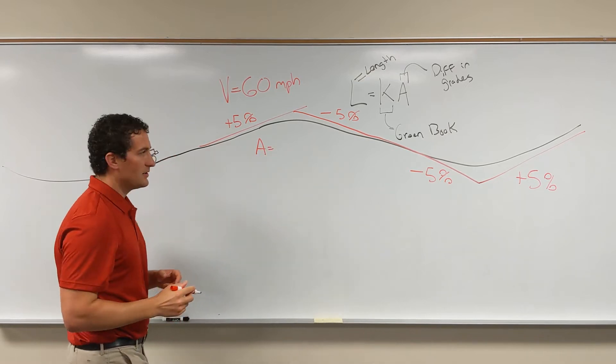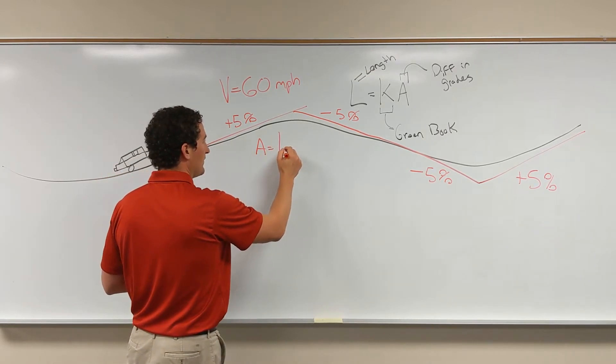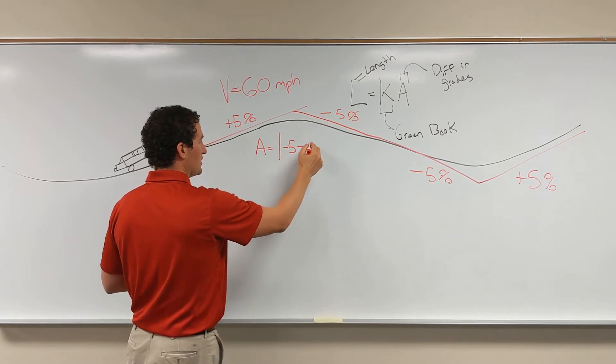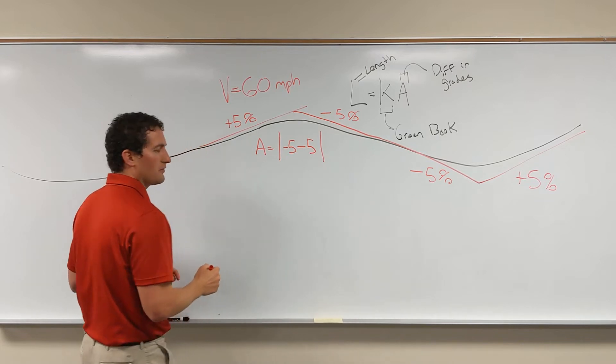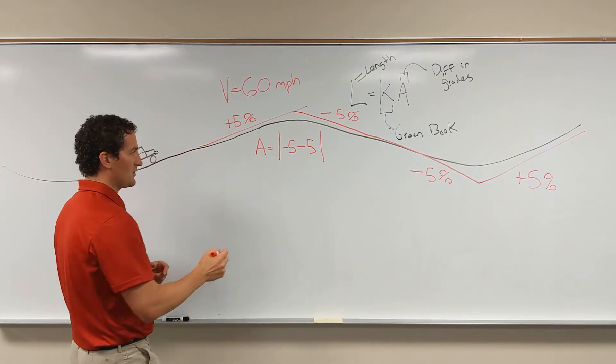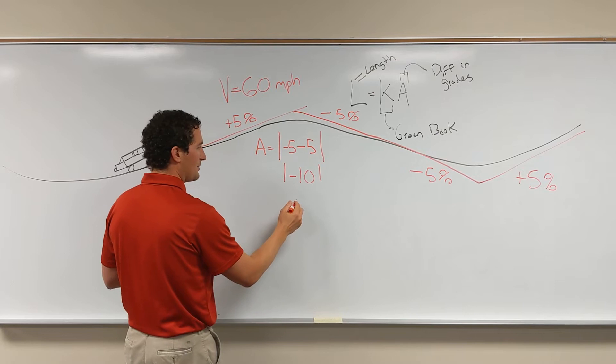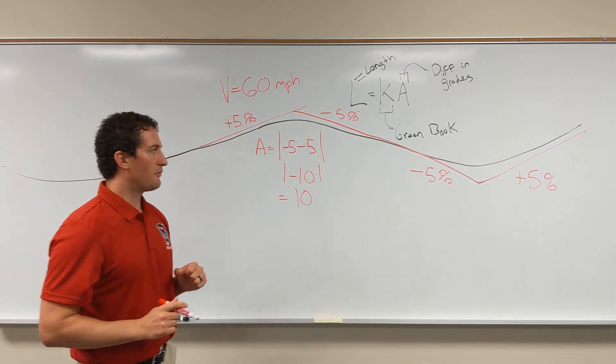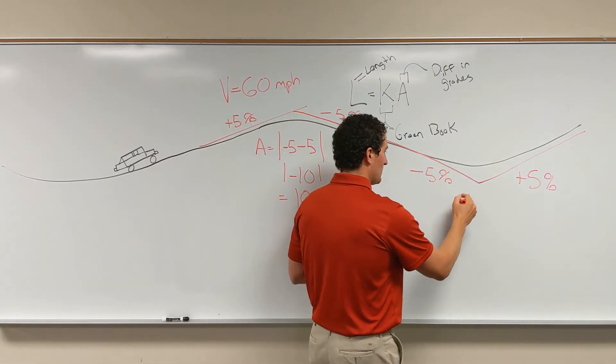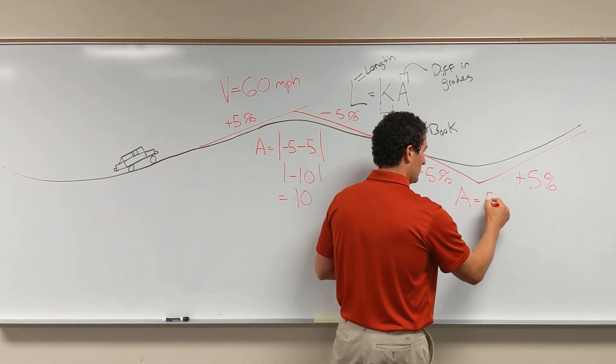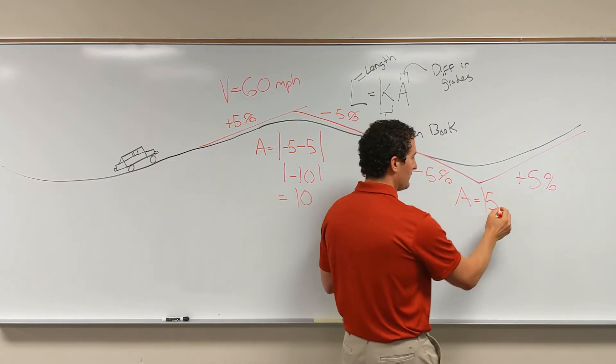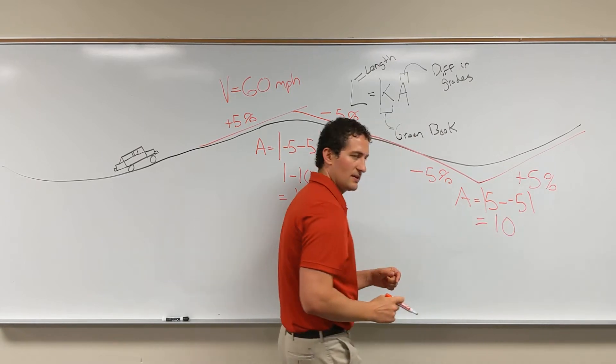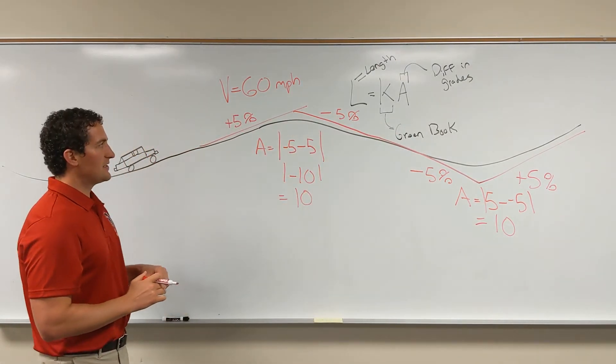A, the difference in grades. We're going to take the absolute value of minus 5, so that's G2 minus G1, minus 5 minus 5 gives us negative 10. We're going to take the absolute value of that, so A is equal to 10. Similarly for our sag curve, it's going to be the absolute value of 5 minus negative 5, and that again will give us 10.